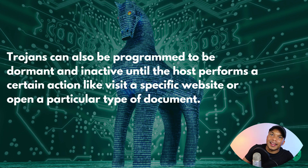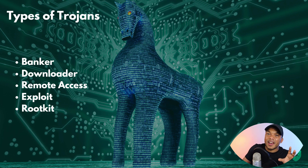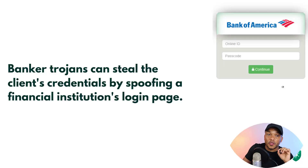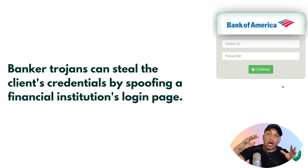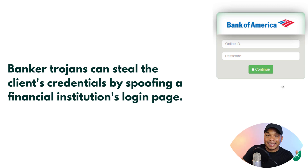When it comes to types of trojans, there are over 20, but I'm going to give you the big five — the most popular ones: Banker, Downloader, Remote Access, Exploit, and Rootkit. The first is the Banker trojan, which has the ability to steal the victim's credentials by spoofing a financial institution's login page. For example, you might see what looks like the Bank of America login page — complete with the logo, fields for user ID and passcode, and a continue button.